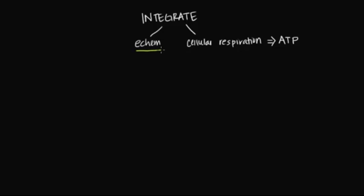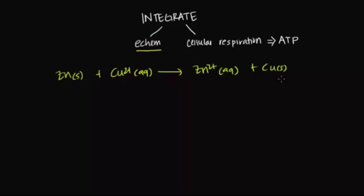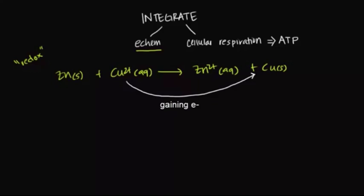Let's review a simple oxidation and reduction reaction between solid zinc and copper ions floating around in aqueous solution. The products of this reaction are zinc ion and solid copper. Remember that whenever we're talking about reduction-oxidation reactions, or redox reactions, we're talking about the flow of electrons. We must ask: what is gaining electrons and what is losing electrons? Copper here, which is positively charged, is gaining electrons and therefore being turned into solid copper, which has no charge — so we say it's being reduced.